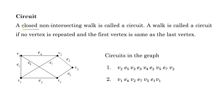A circuit is a closed, non-intersecting walk. Closed means the first vertex is the same as the last vertex; non-intersecting means no vertex is repeated in between. Alternatively, a walk is called a circuit if no vertex is repeated and the first vertex equals the last vertex. Examples of circuits in this graph: v2, e5, v3, e3, v4, e2, v5, e7, v2.